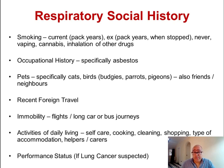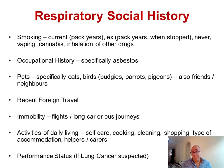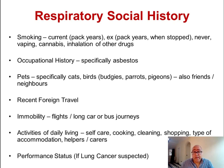Occupational history is very important. Understand what jobs people have had going all the way back to school. Ask specifically about asbestos exposure, which is very relevant — and importantly, asbestos exposure can occur not just in a work context but also at home. Older homes may have asbestos in fireplaces, chimneys, old boilers, or roof tiles.